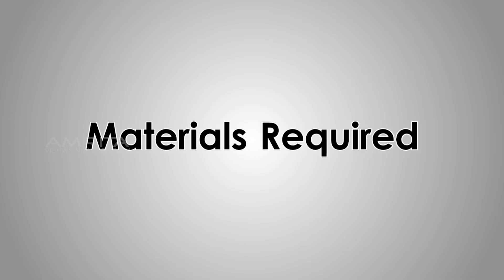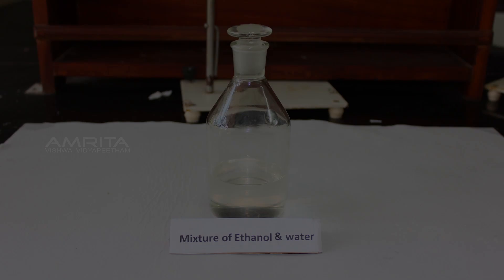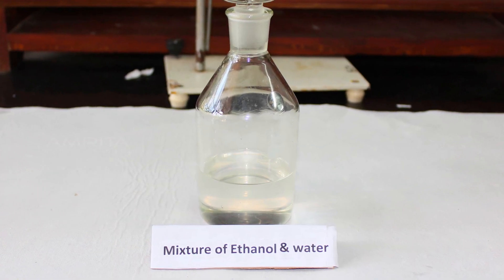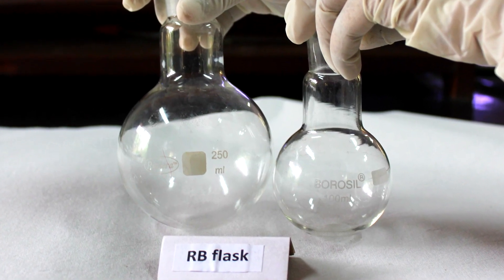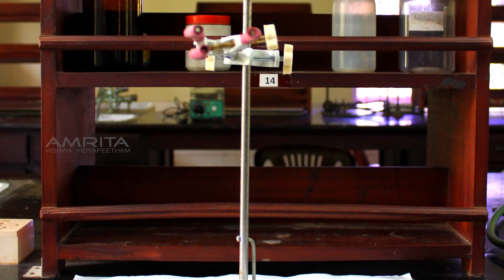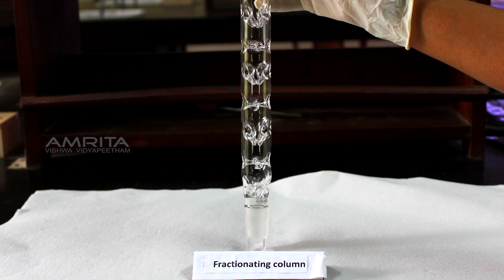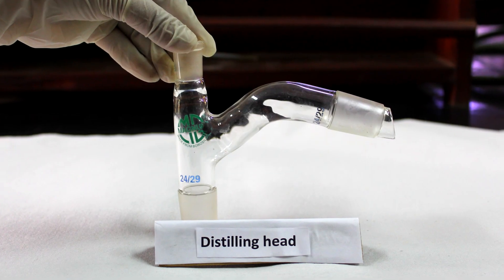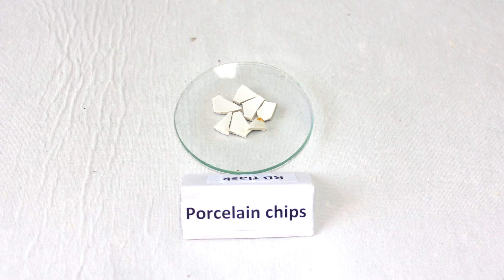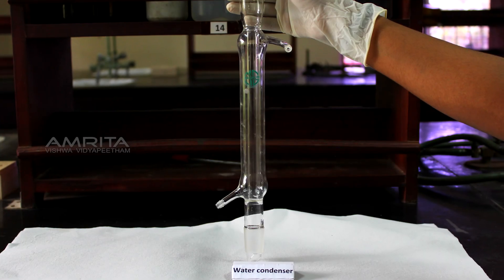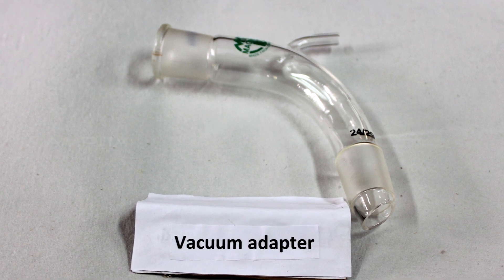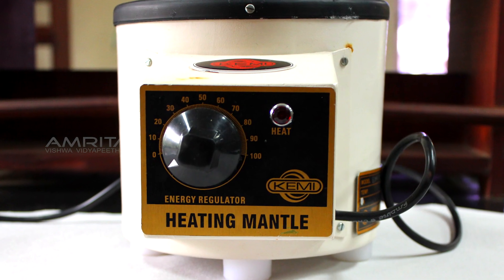Materials Required: Mixture of ethanol and water, 250ml and 100ml RB flasks, stand with clamp, fractionating column, distilling head, porcelain chips, thermometer adapter, water condenser, vacuum adapter and heating mantle.